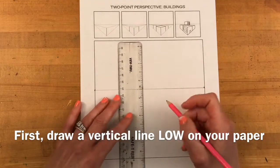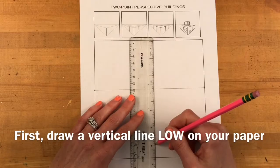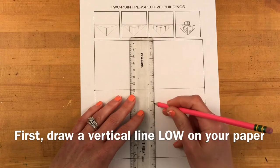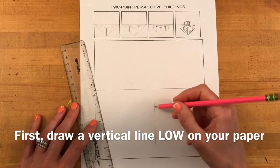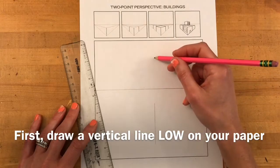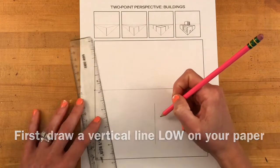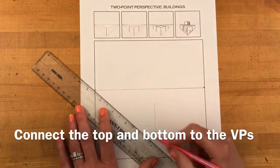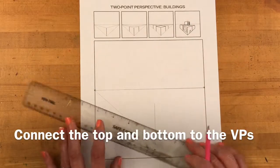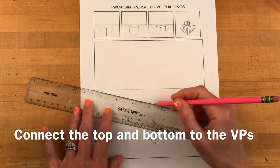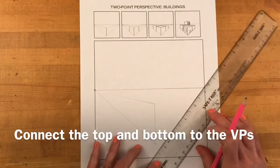Next you're going to draw a vertical line low on your paper. This is going to be the front corner of the building that is closest to the viewer. Make your line end under the horizon line. Now connect the top and the bottom of that line to both vanishing points.